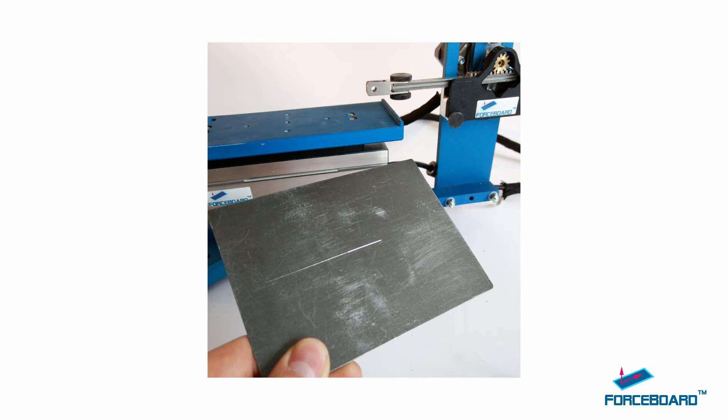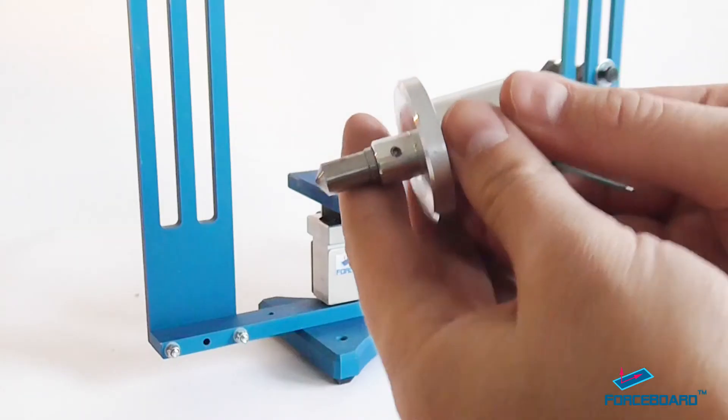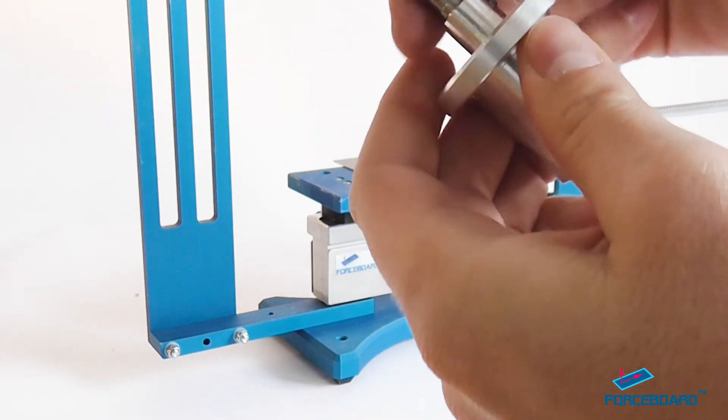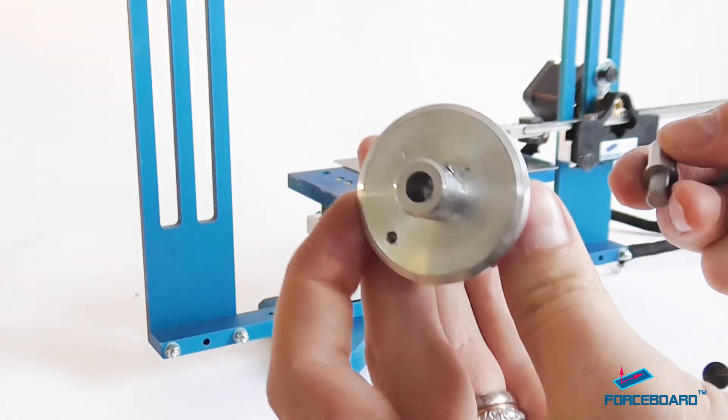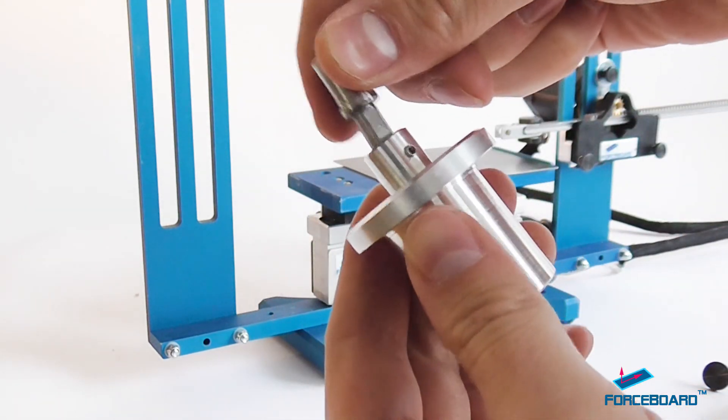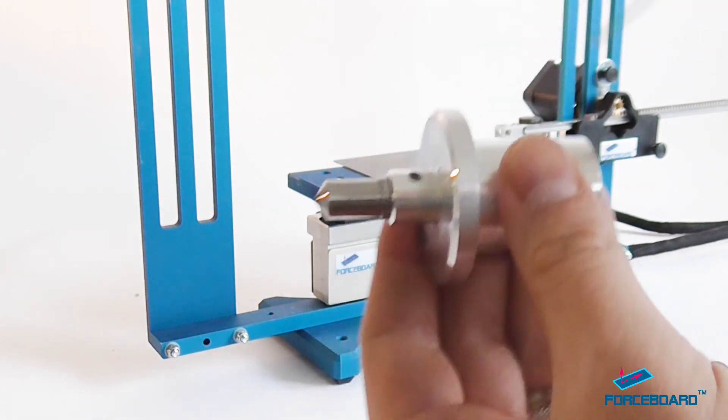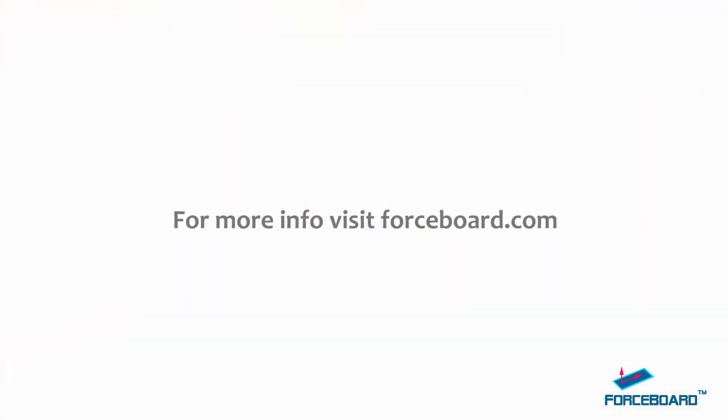It is super easy to change the probe and you can use the same fixture for scratch, for linear wear, and also for friction testing with any test probe or test object of your own choice. Force Board really gives you great flexibility.